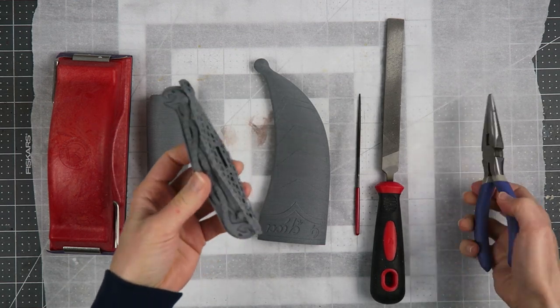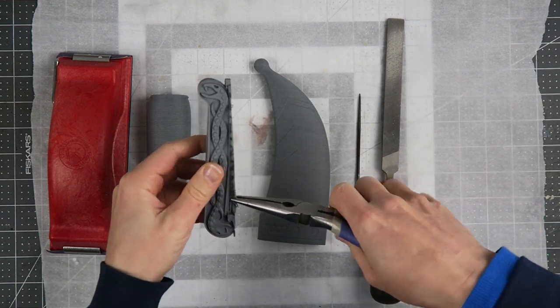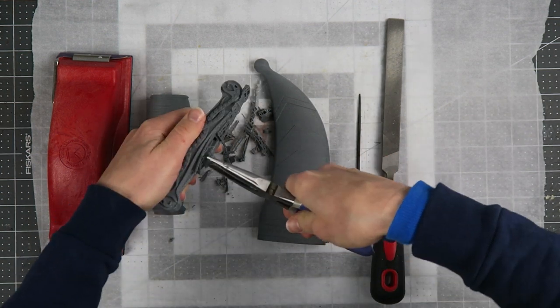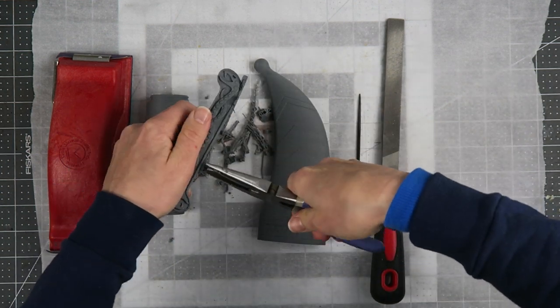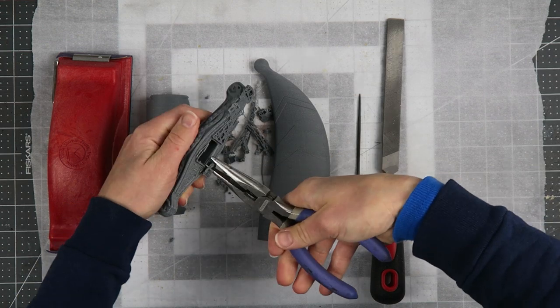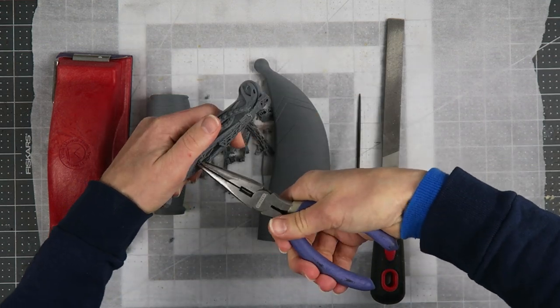With the cross guard this was the only piece that had some support structure and I did add some custom supports there to get the best possible print quality. They don't remove perfectly but the overall quality is still better than the auto supports.